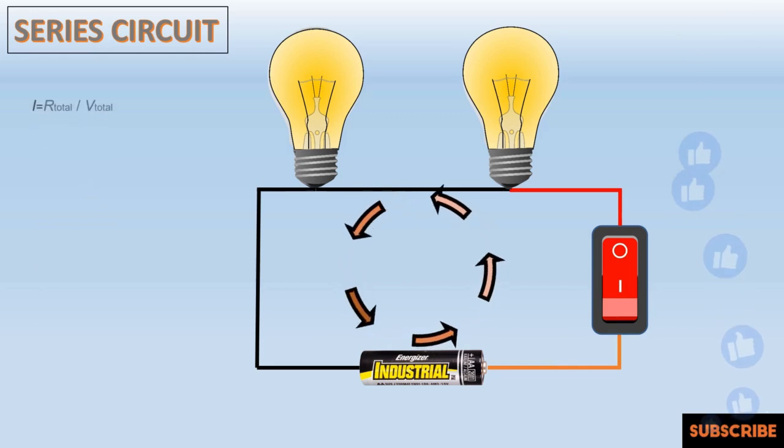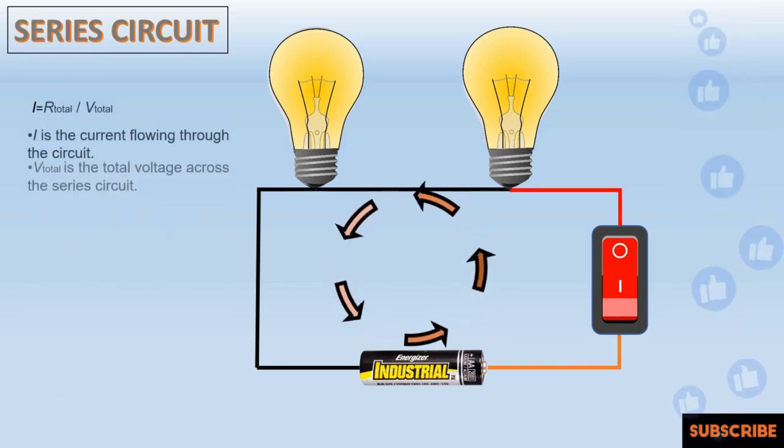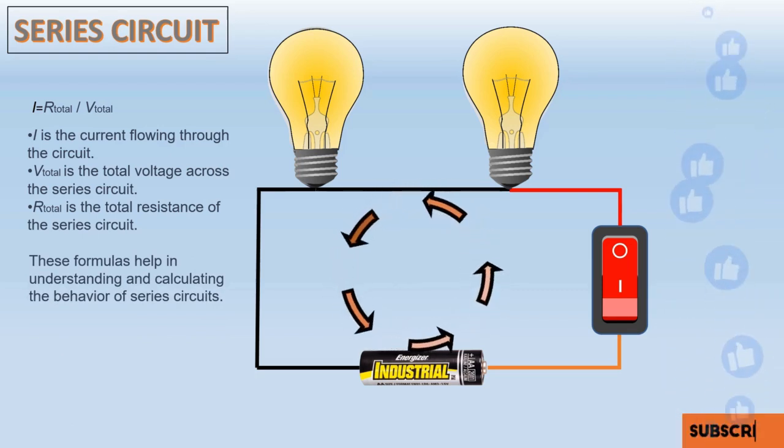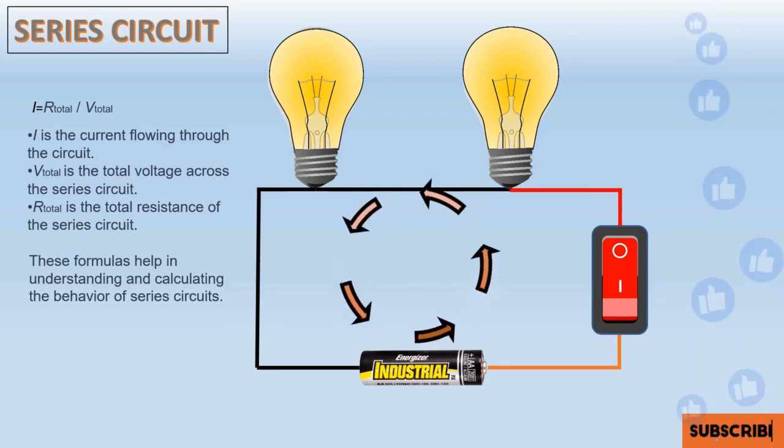If any component in a series circuit fails, e.g., an open switch or a burnt out light bulb, the entire circuit is interrupted and no current flows.